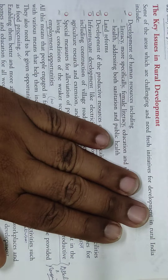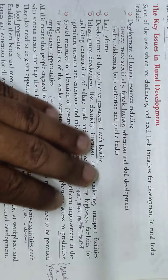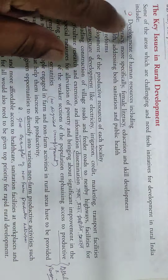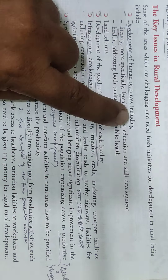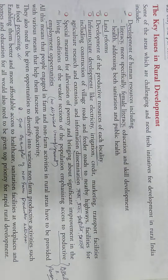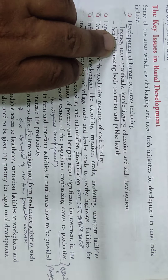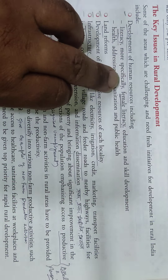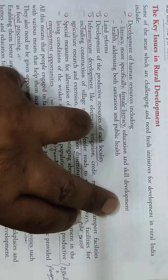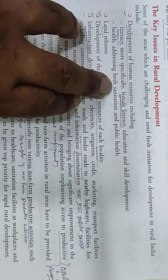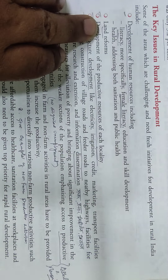There are some areas that are challenging and need fresh initiatives for development in rural India. These include: Development of Human Resources — focusing on human development including literacy, more specifically female literacy, education and school development, and health addressing both sanitation and public health. Next is Land Reforms.